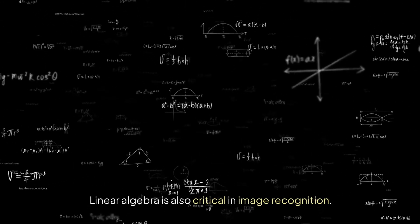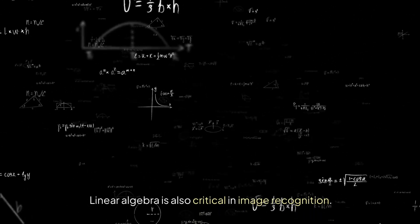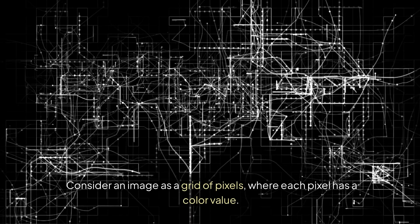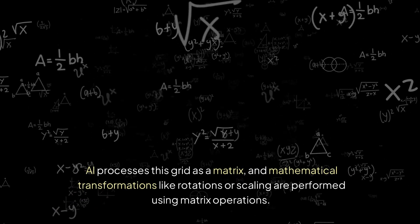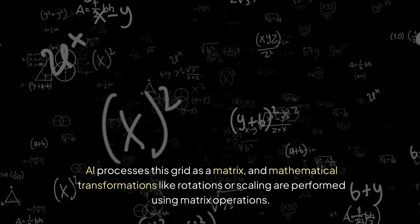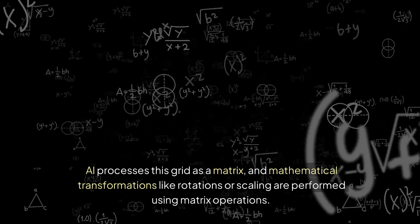Linear algebra is also critical in image recognition. Consider an image as a grid of pixels, where each pixel has a color value. AI processes this grid as a matrix, and mathematical transformations like rotations or scaling are performed using matrix operations.